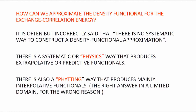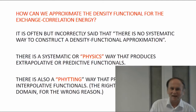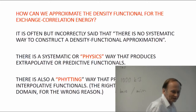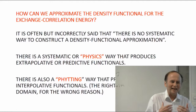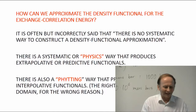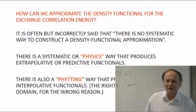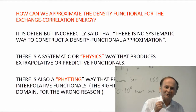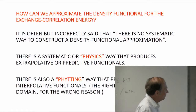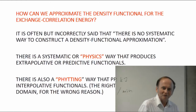I'm going to review the approach I discussed in three lectures on the LDA, GGA, and meta-GGA: how can we approximate the density functionals for the exchange-correlation energy? You'll often hear people say there's no systematic way to construct a density functional approximation. That's true in one sense — there's no mechanistic way to do it. It's not like perturbation theory, which is a sort of mechanistic approach where you can systematically build up the answer. Construction of a density functional doesn't work quite that way, but there is an approach about as systematic as you can be at present.